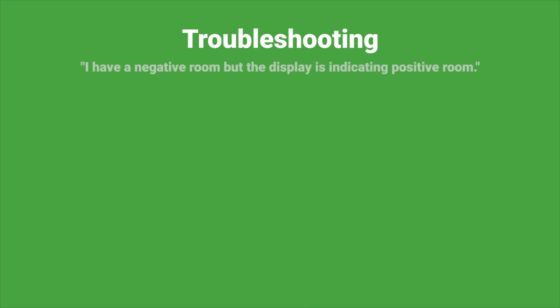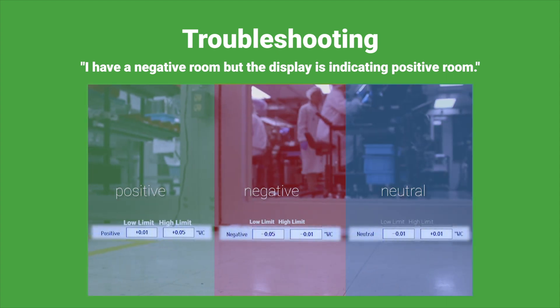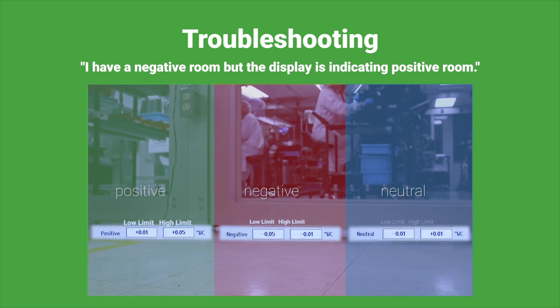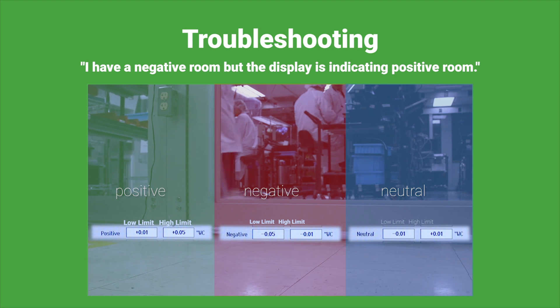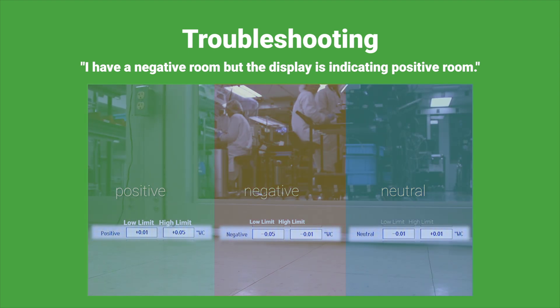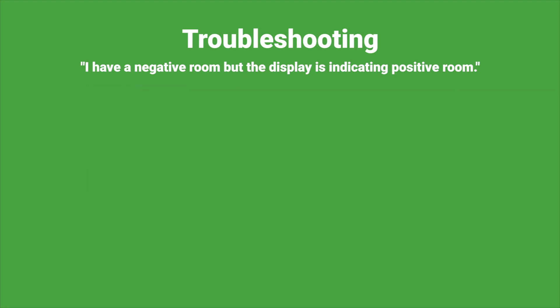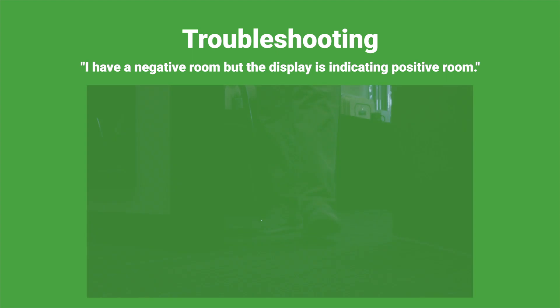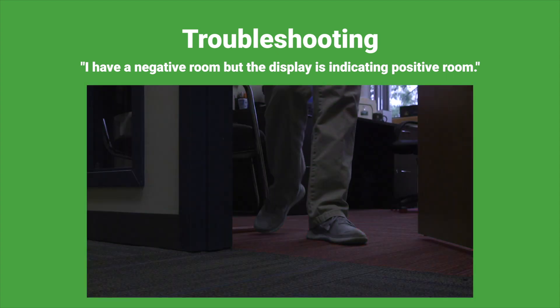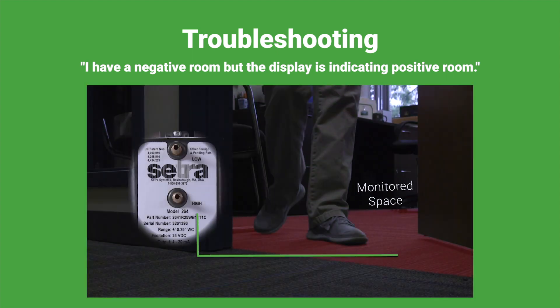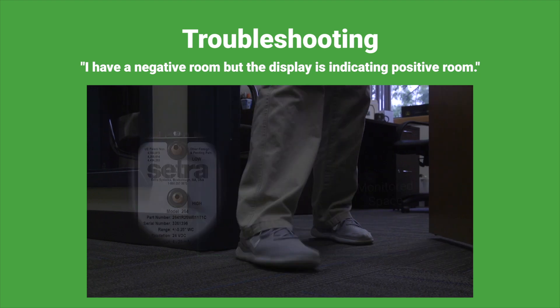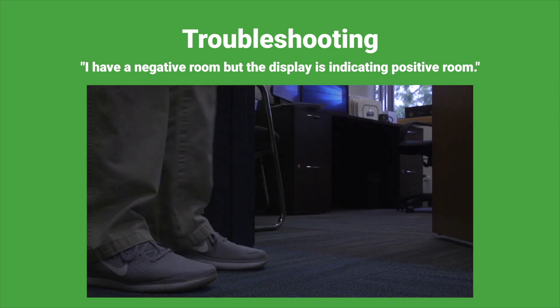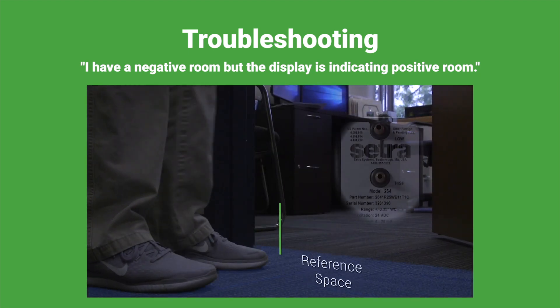Troubleshooting: I have a negative room, but the display is indicating positive room. Check the alarm set points and make sure they correspond to the proper kind of room. Also, be sure the unit is plumbed correctly so that the high or positive port is plumbed to the room being monitored and the low or negative port is plumbed to the reference space.